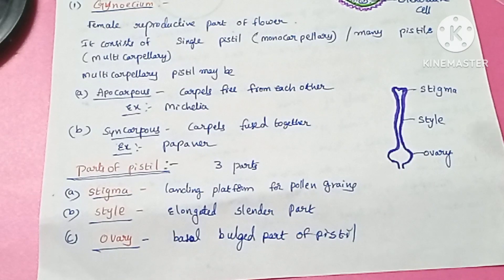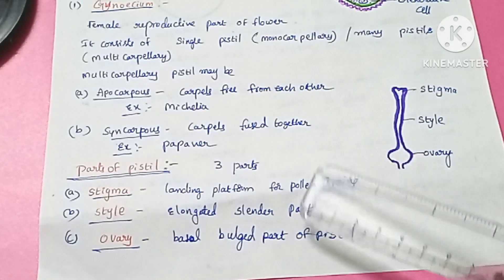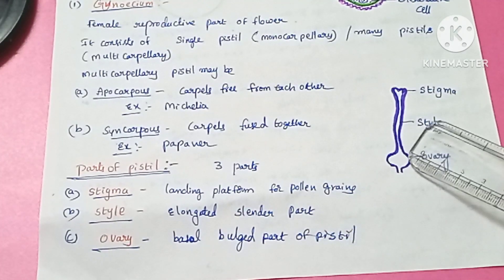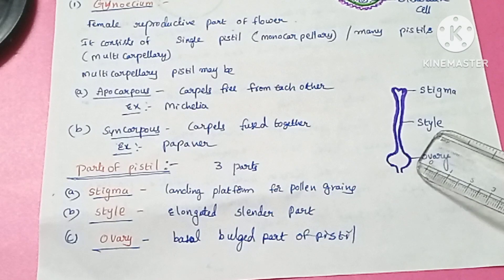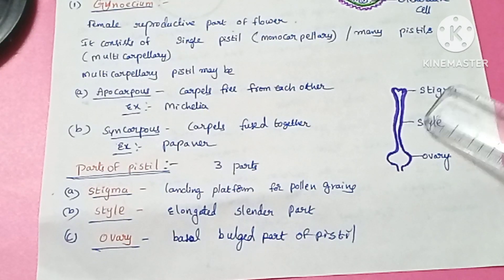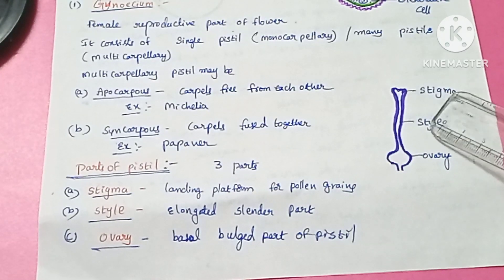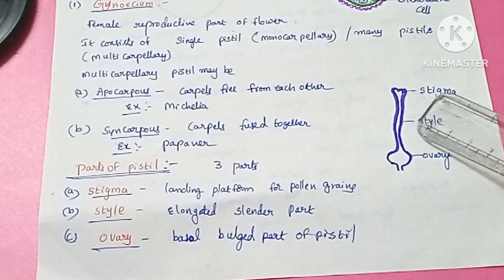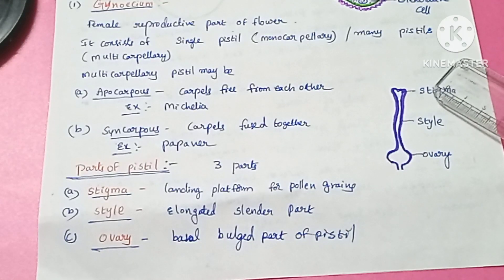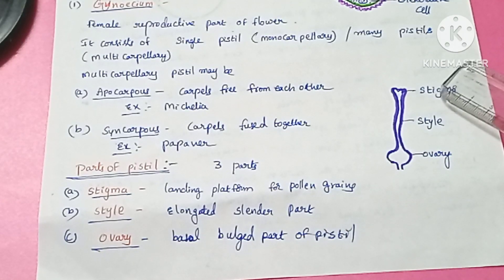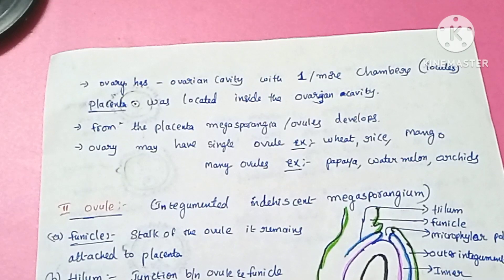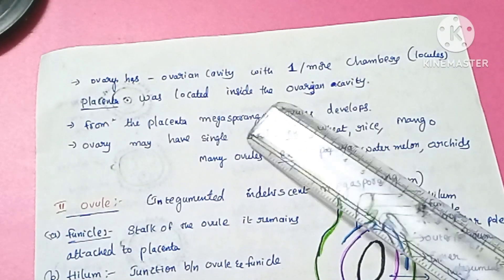To recap: the three parts of the pistil are ovary, style, and stigma. The ovary is the basal part, the style is the middle slender elongated part, and the stigma is the opening of the pistil.